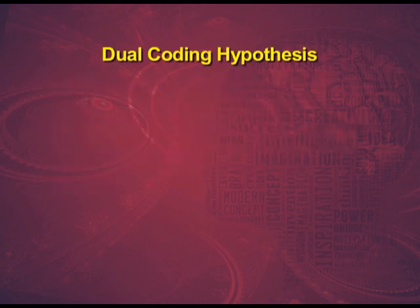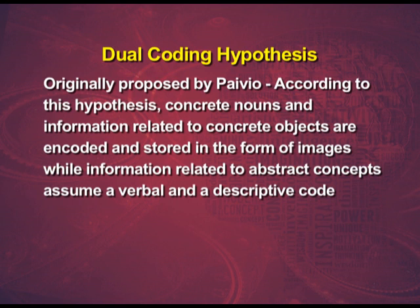The dual coding hypothesis was originally proposed by Paivio. According to this hypothesis, concrete nouns and information related to concrete objects are encoded and stored in the form of images, while information related to abstract concepts assumes a verbal and descriptive code. For example, if you are asked to describe a bird, an image of a bird is first generated and based on this image you describe it. But the meanings of concepts like truth or honesty will not have such accompanying images. Thus, any information encoded both verbally and visually will be recalled with greater ease.